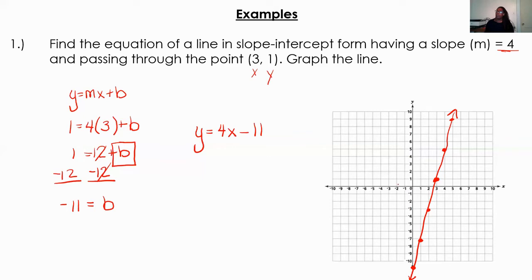You're probably saying, couldn't I just graph point (3, 1) and then from there go up 4 over 1 to draw two points, draw my line, and see where it intersected on the Y-axis? You could have done that. But if they're asking you to find the equation, we needed two things: the equation itself, and then also to graph it.